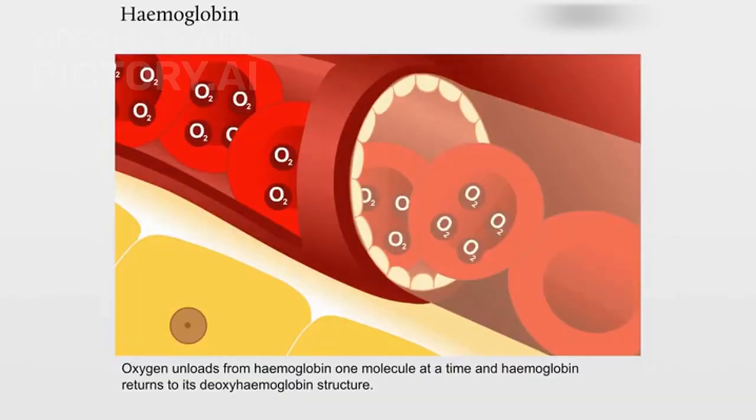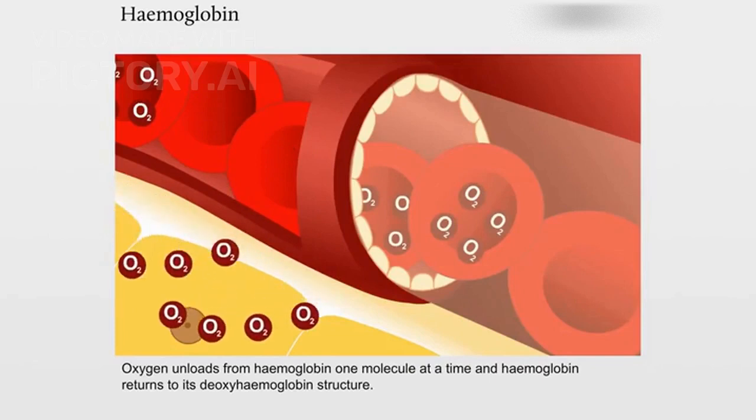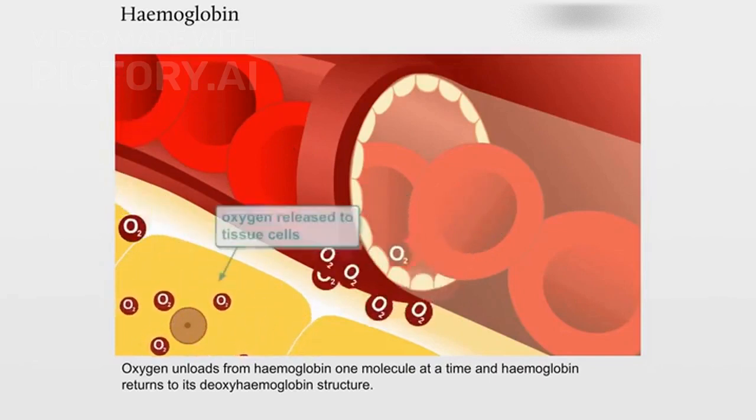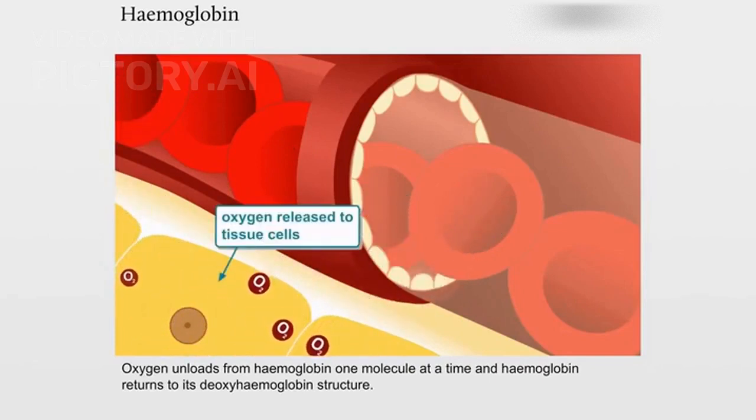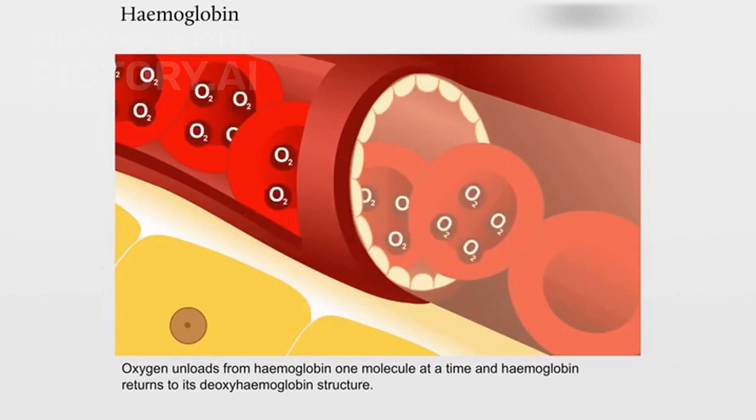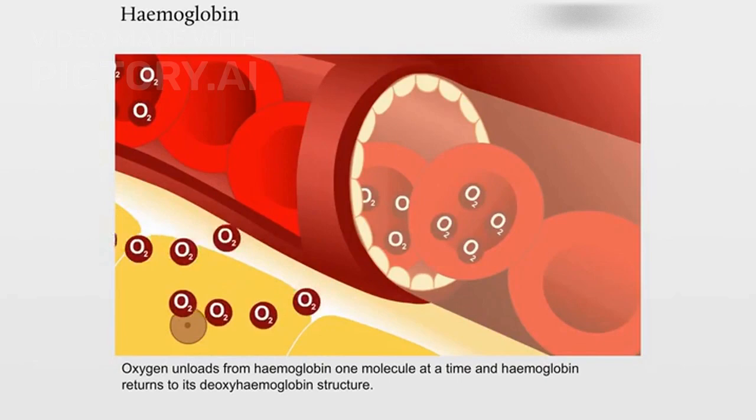The primary function of RBCs is to transport oxygen from the lungs to tissues and carry carbon dioxide back to the lungs for exhalation. This is made possible by the red pigment hemoglobin, which binds to oxygen molecules.